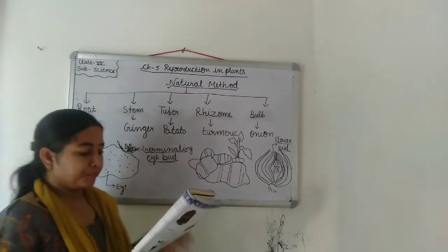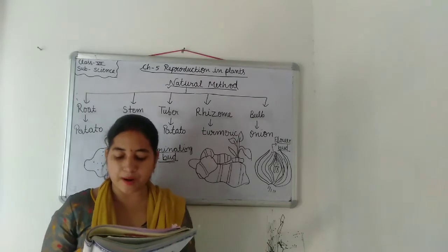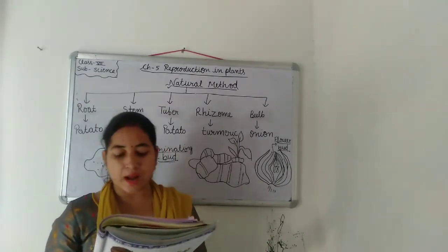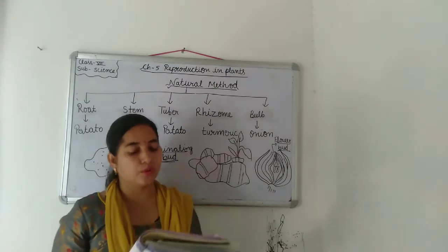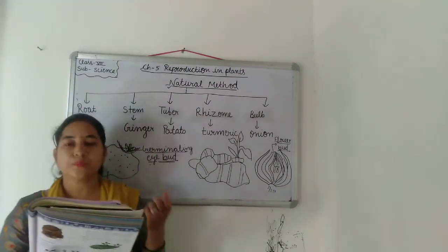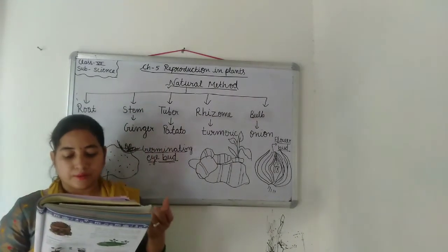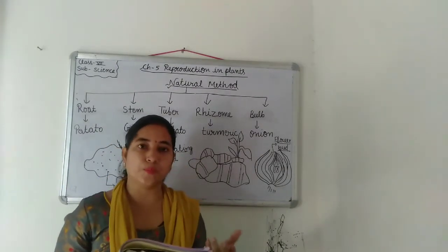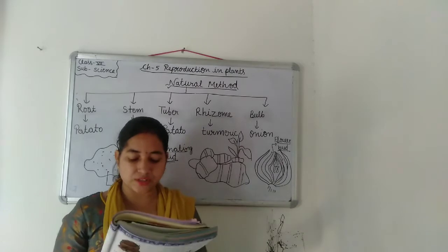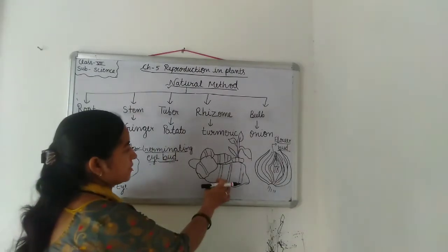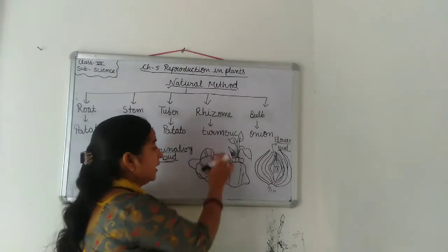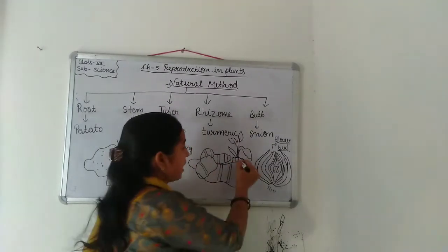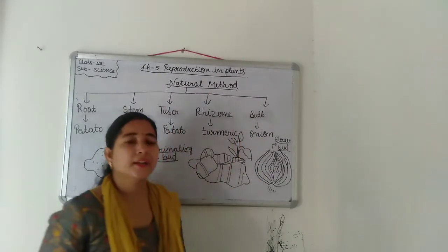Now rhizome — they have buds from which outgrowths are produced, which give rise to new plants. Ismein outgrowth produce hoti hai jo new plants ko utpann karti hai. This is seen in ginger, turmeric, and banana. Ginger ke upar yeh outgrowth dikhai deti hai, aur is outgrowth se new plant germinate ho jata hai.